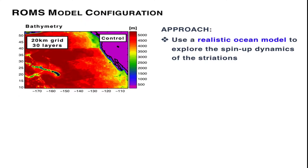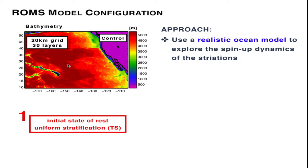With that in mind, a couple words about the model configuration. This is the ROMS model grid, the bathymetry. We use a 20-kilometer horizontal resolution, which is at least eddy admitting. This is for the control run. It has 30 vertical layers. The model is initially started from a state of rest with a uniform stratification in temperature and salinity which is characteristic for this region.